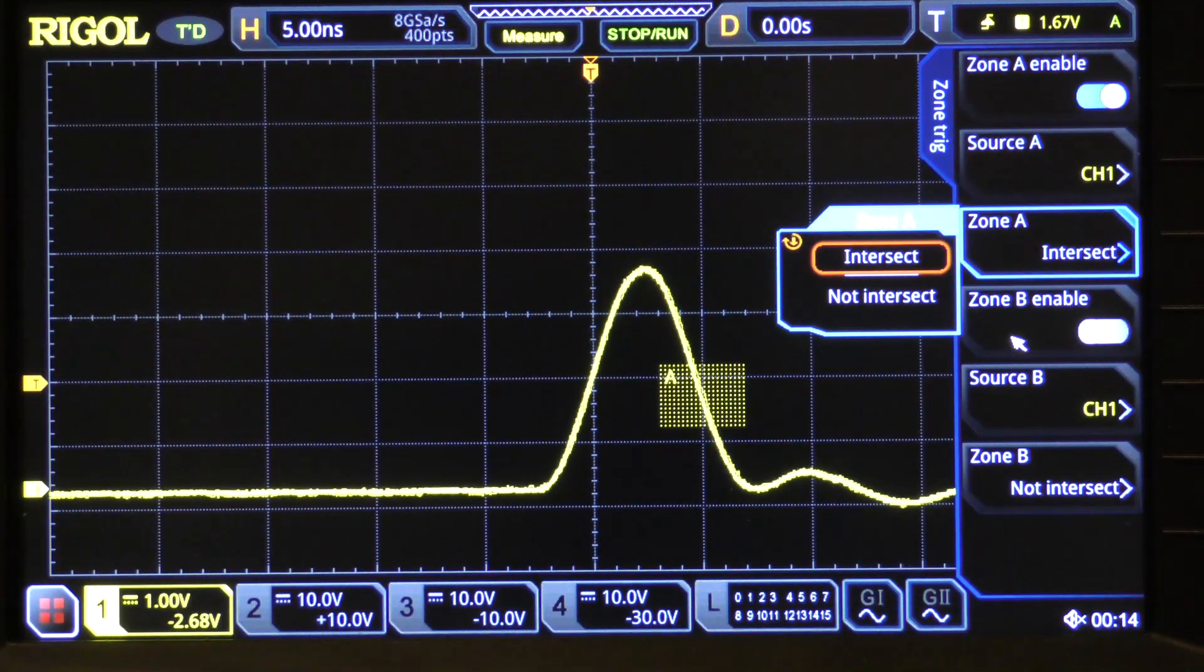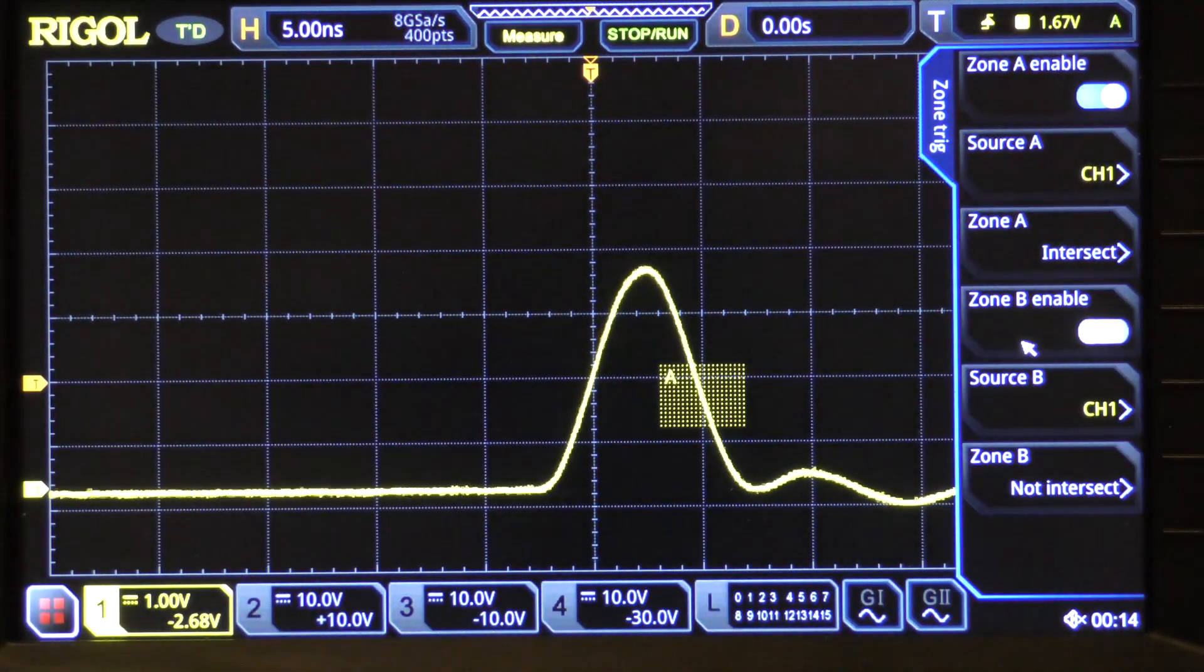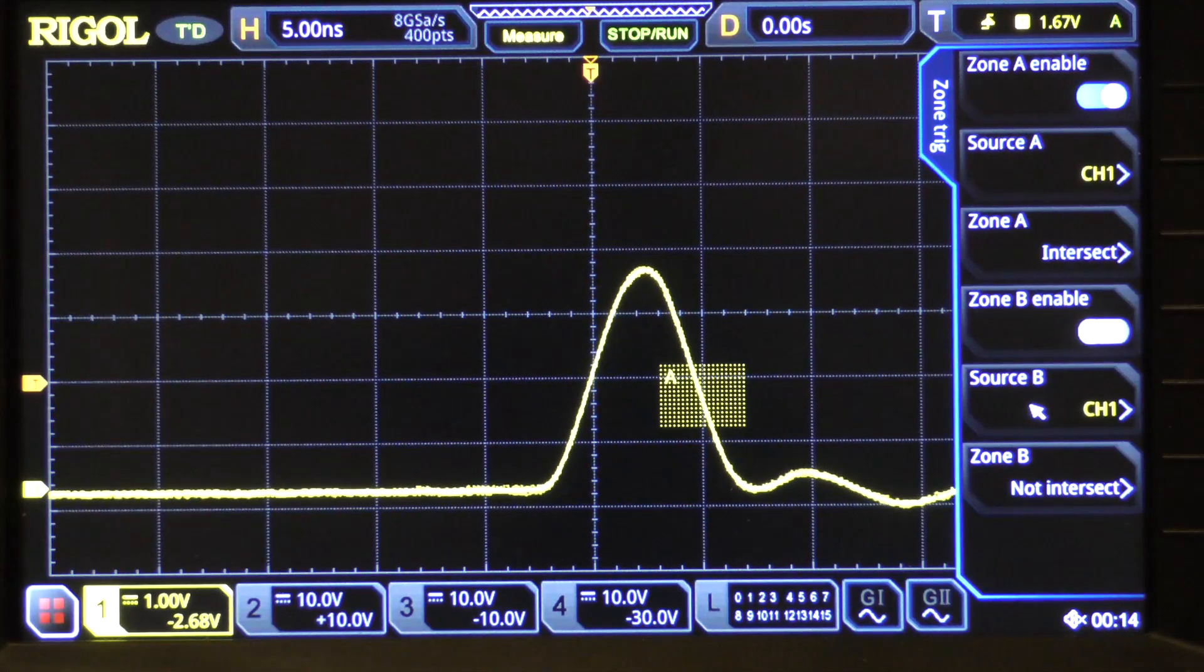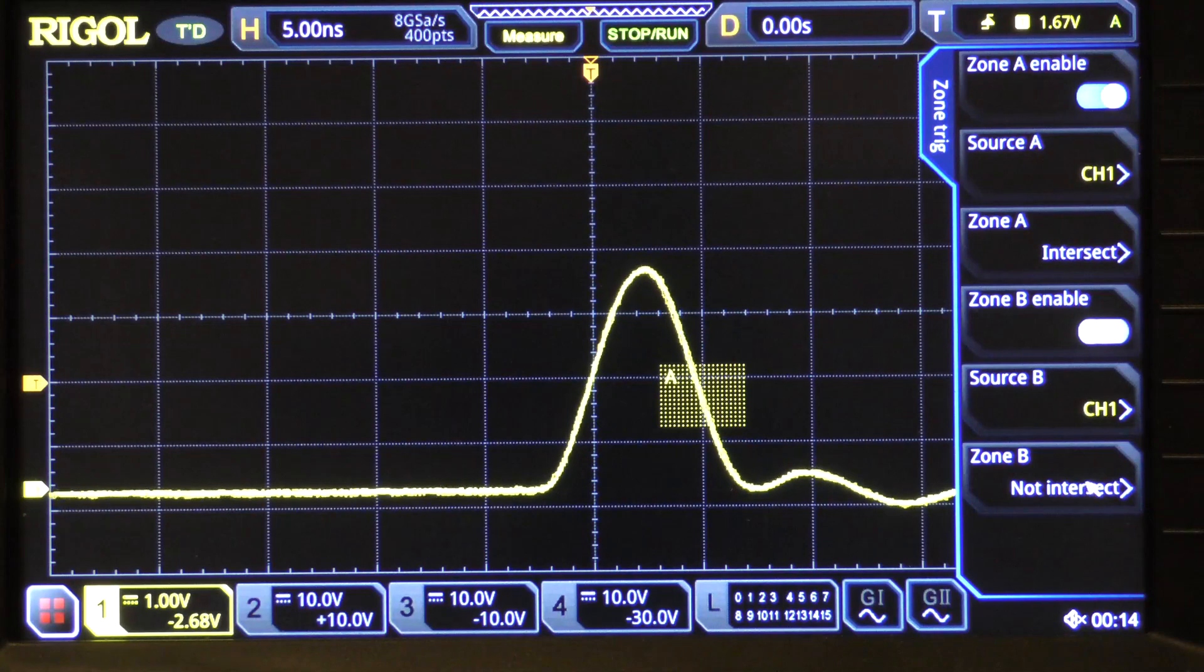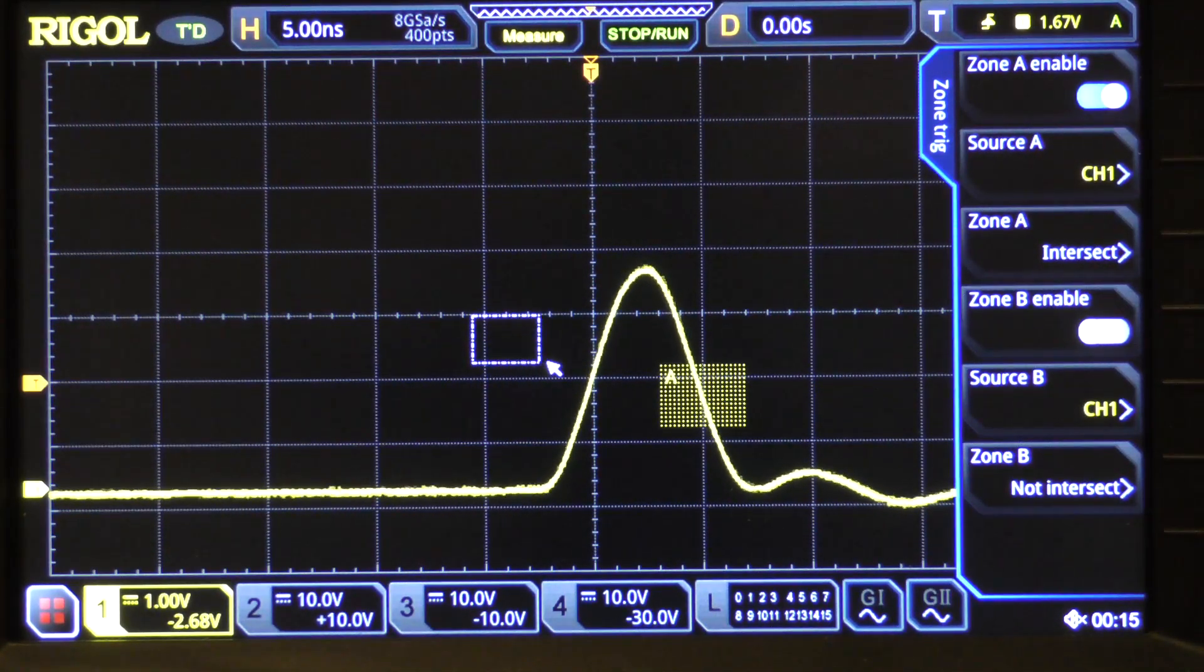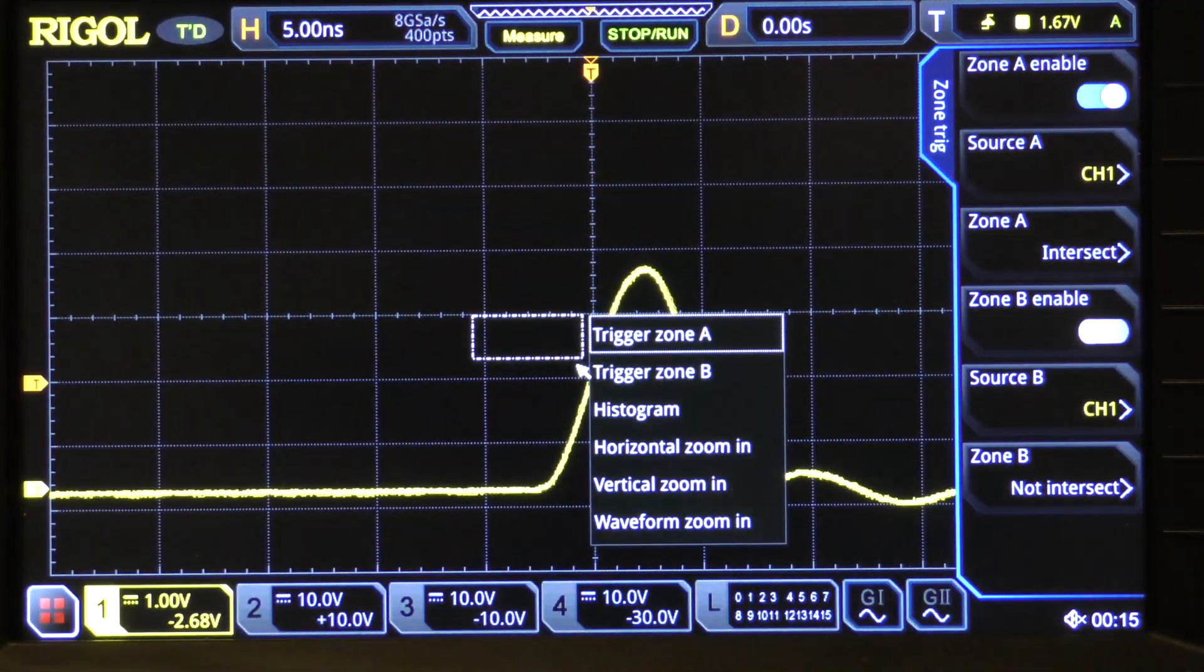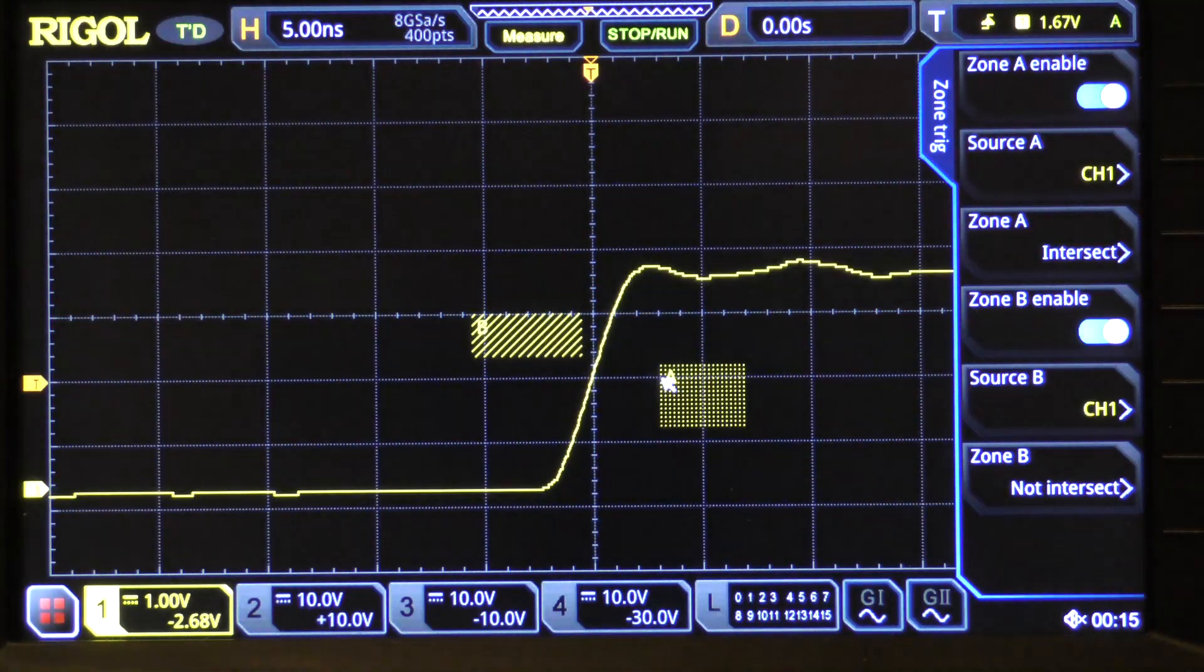Then there is a zone B enable, a source for zone B, and the type of what the zone does there. Once again enabled or not enabled. So, let's turn on a zone B. We are just going to draw up here another box and we are going to say that is going to be trigger zone B.